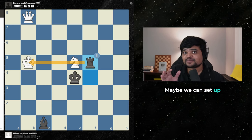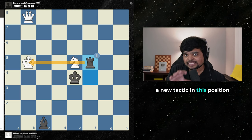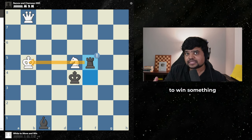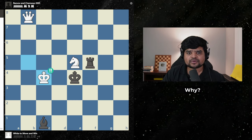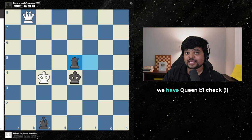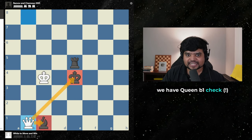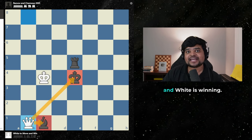Maybe we can set up a new tactic in this position to win something equivalent back. And that move is king c4. Why? If black takes our knight, we have queen b1 check. Winning back the material and white is winning.